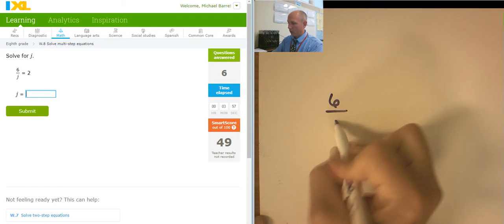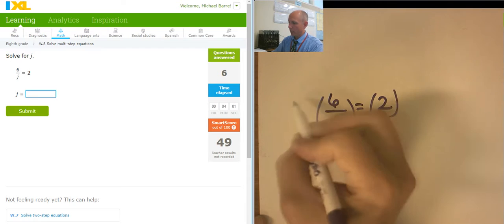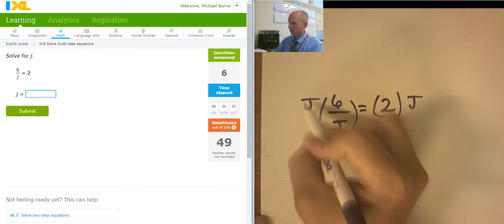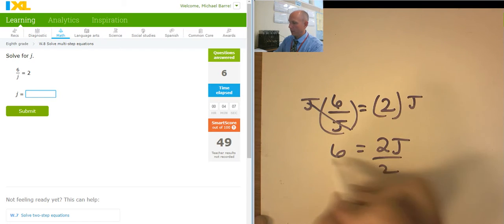So 6 over j equals 2. I'm going to multiply both sides by j. So 6 equals 2j. I'm going to divide both sides by 2.